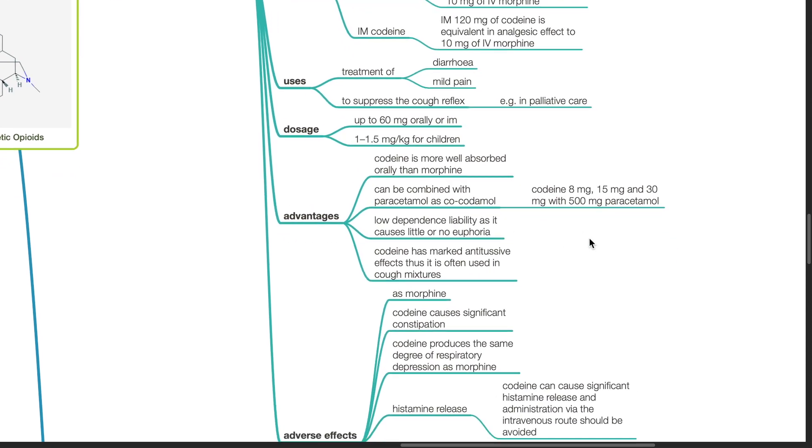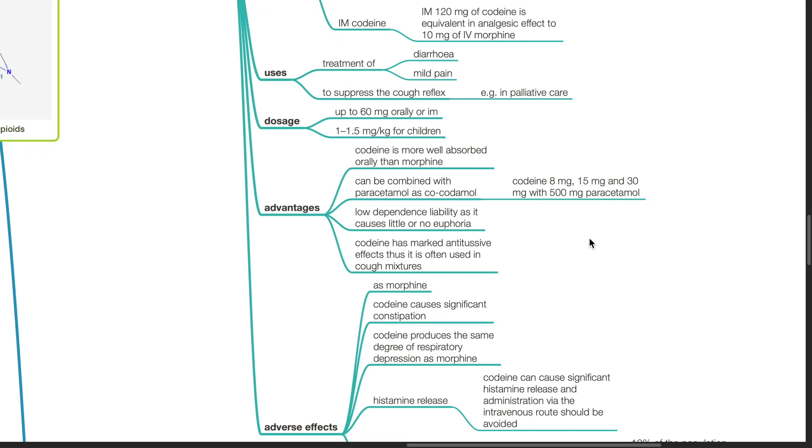Advantages of codeine. Codeine is more well absorbed orally than morphine. It can be combined with paracetamol as co-codamol, codeine 8mg, 15mg, or 30mg with 500mg paracetamol. Codeine has low dependence liability as it causes little or no euphoria. Codeine has marked antitussive effects, thus it is often used in cough mixtures.